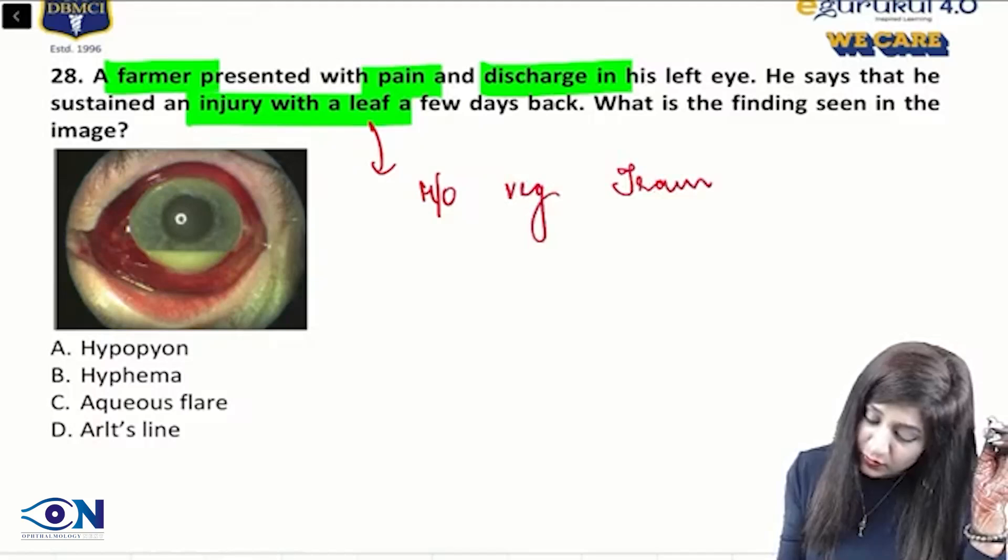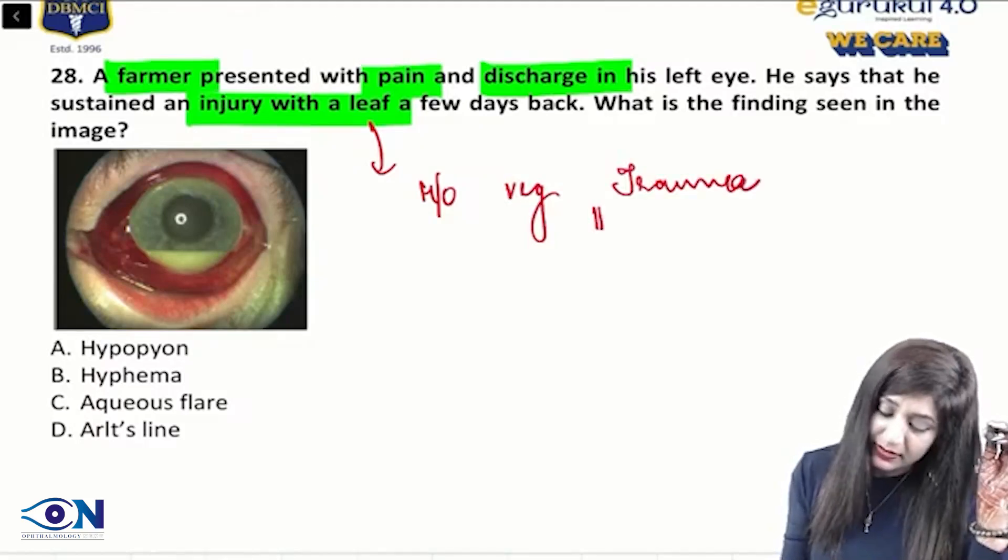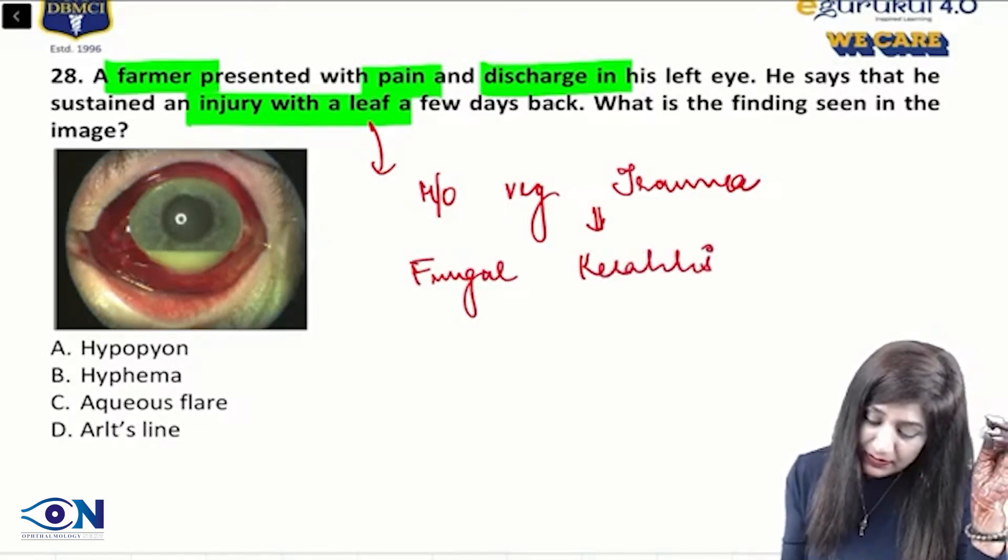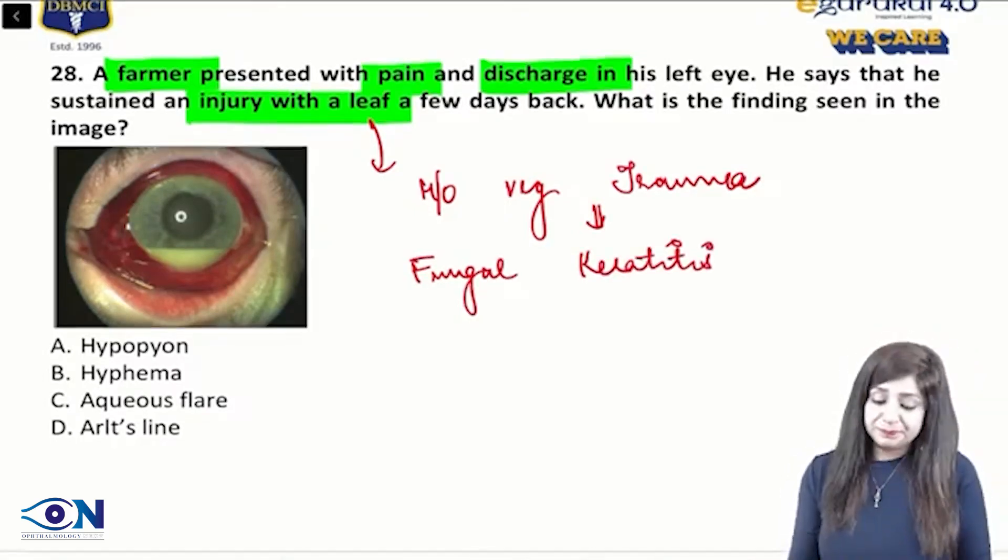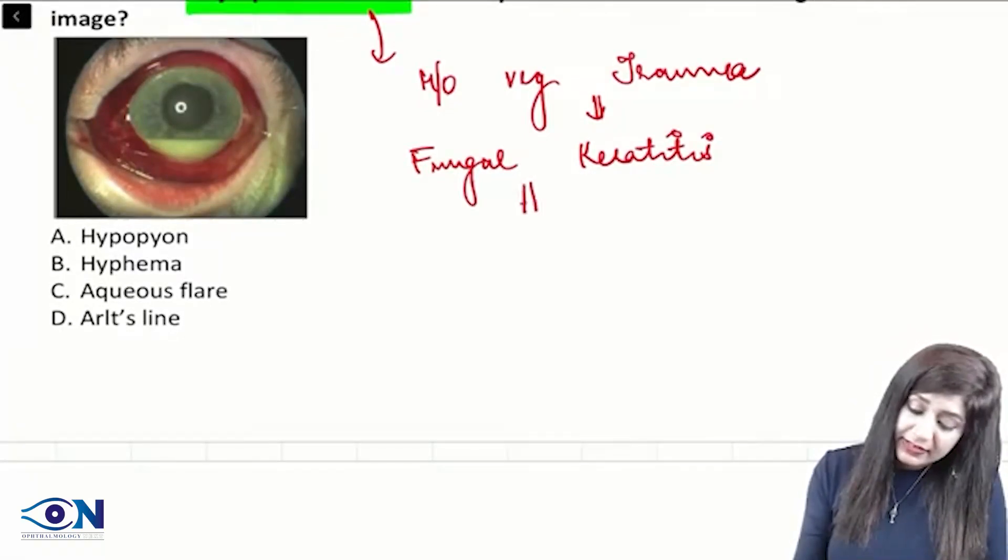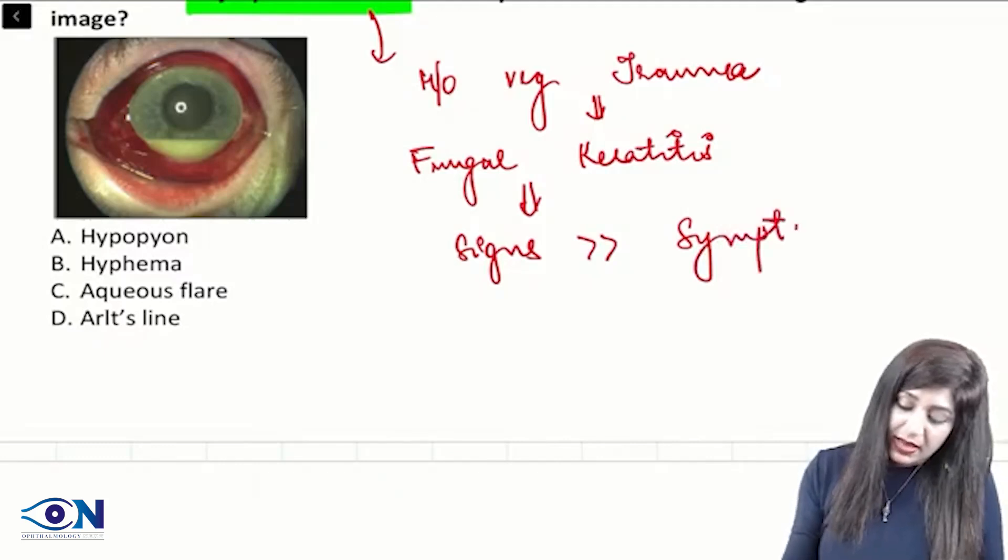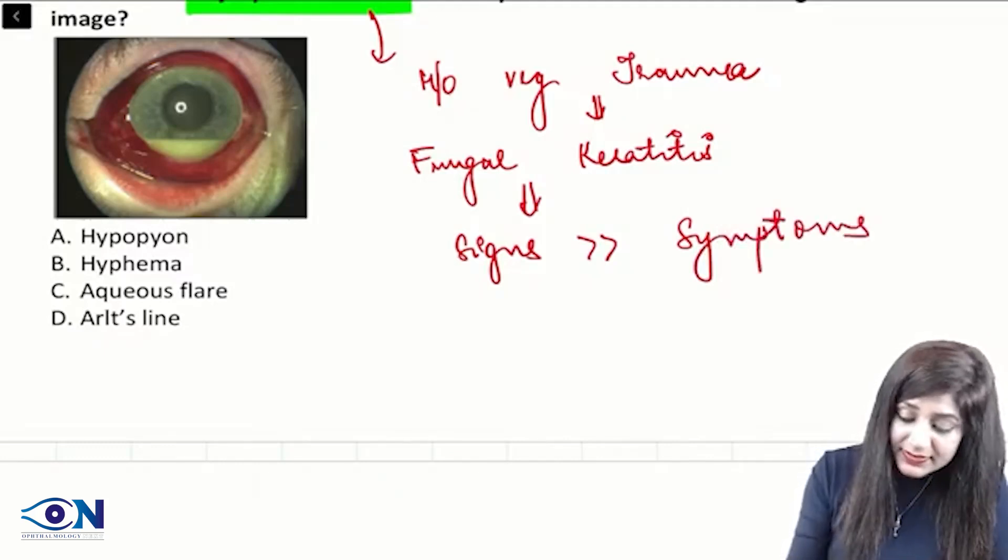Whenever they are giving you history of vegetative trauma, it can lead to fungal corneal ulcer or fungal keratitis. And in fungal keratitis, signs are much more than the symptoms and they have shown you one sign here.